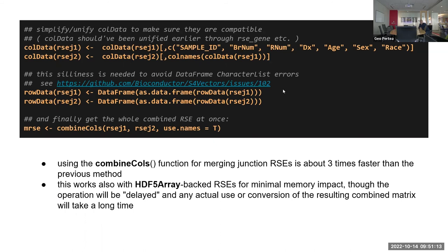The `combineCols` call itself is fast because it's delayed, but the actual matrix processing happens when you save the merged object. If you have HDF5 array-backed RSEs, at that time the values are fetched and written to a different backend — either in-memory (which you probably don't want for a merge) or directly to another HDF5 array-backed RSE on disk. That's pretty much the coverage of what I wanted to show: that we can use these methods and file formats going forward.